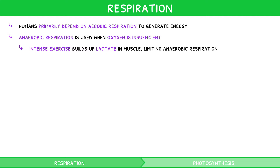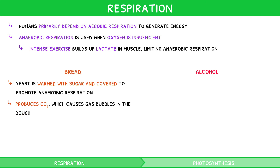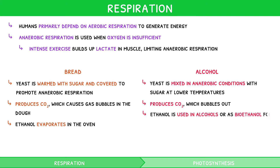Yeast is a unicellular fungus used to make bread and alcohol. To make bread, the yeast is warmed with sugar and covered to promote anaerobic respiration. This produces CO2, which causes gas bubbles in the dough and the stereotypical rise, and ethanol, which evaporates in the oven. To make alcohol, yeast is mixed in anaerobic conditions with sugar at lower temperatures, producing CO2, which bubbles out, and ethanol.